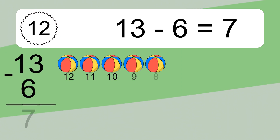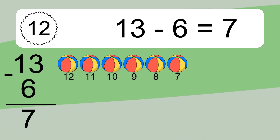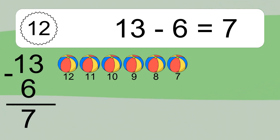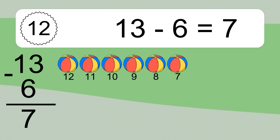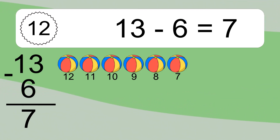13 minus 6 equals what? 13 minus 6 equals 7. Let's count it: 12, 11, 10, 9, 8, 7.